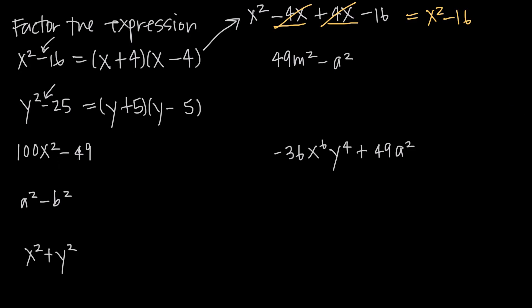Here we have 100x squared minus 49. Well, 100 is a perfect square multiplied by another perfect square, x squared, and then we have a perfect square in 49. So we'll draw our parentheses here. The square root of 100 is 10, so we write our 10 here. The square root of x squared is x, and because 100 and x squared are multiplied together, we multiply the square roots together. Then the square root of 49 is 7, and we add one and subtract the other.